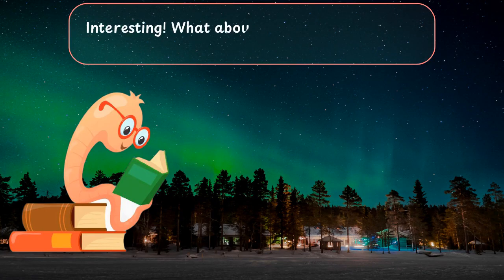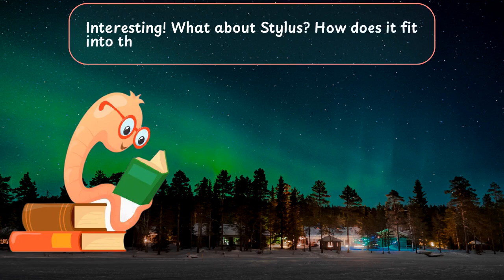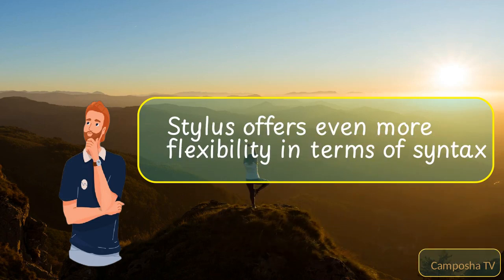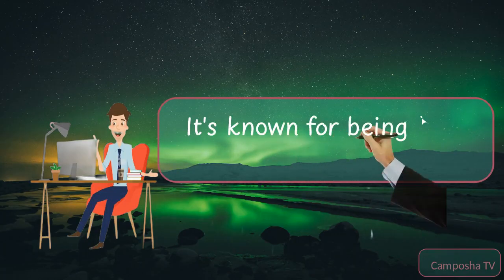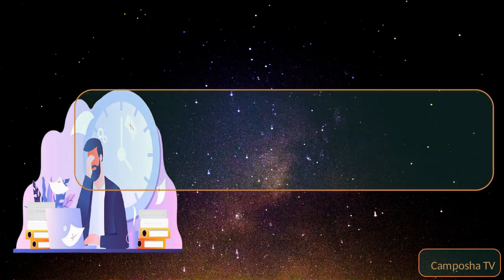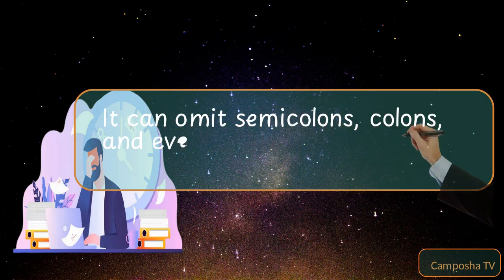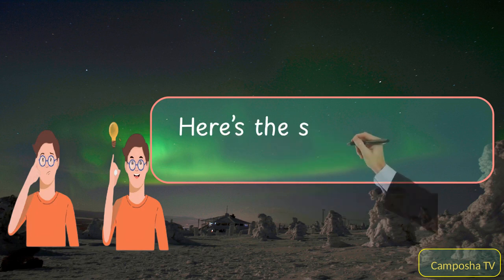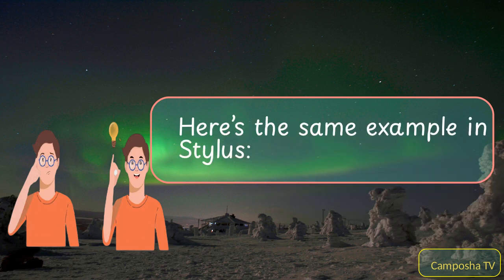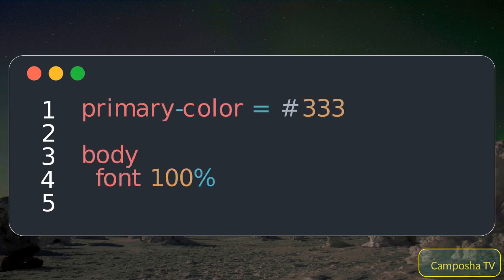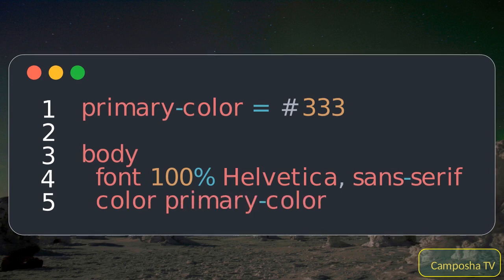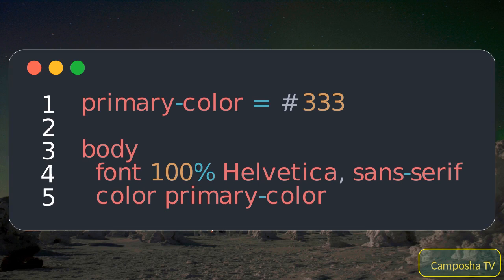Interesting. What about Stylus? How does it fit into this? Stylus offers even more flexibility in terms of syntax. It's known for being highly expressive and terse. It can omit semicolons, colons, and even braces, making the code look cleaner to some. Here's the same example in Stylus. Stylus syntax can be a bit harder to read for beginners, but it offers great flexibility for those who prefer a more concise style.